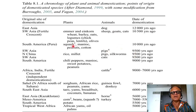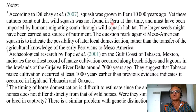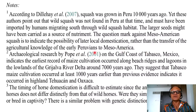It's very interesting to read these footnotes. Squash has one, corn has two, horse has three, cattle five, pigs four. According to one source, squash was grown in Peru 10,000 years ago, yet these authors point out that wild squash was not found in Peru at that time and must have been imported by humans migrating south through the wild squash habitat. The larger seeds might have been carried as a source of nutriment. The question mark against Mesoamerican squash indicates the possibility of later local domestication rather than transfer of knowledge from early Peruvians to Mesoamerica.